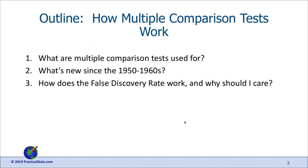So what are multiple comparison tests used for? They're used for a number of different things in environmental science. What's new since the 1950s and 60s, how do they work, and particularly how does the false discovery rate procedure work and why is it important?